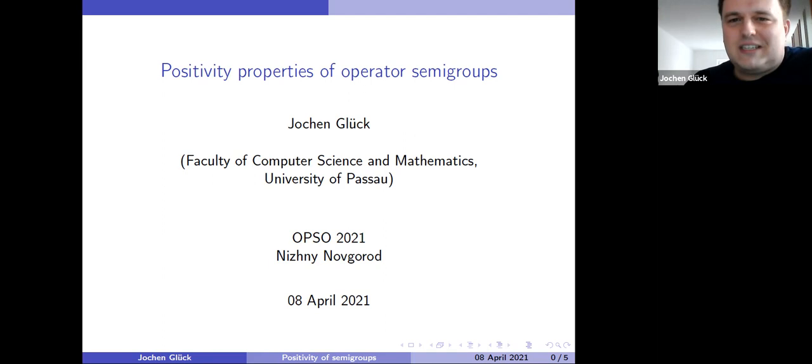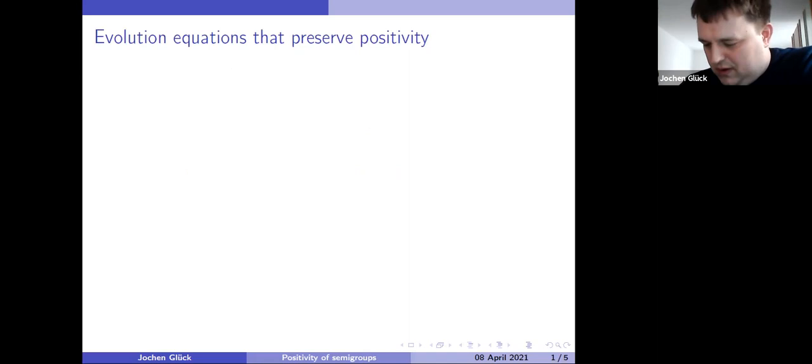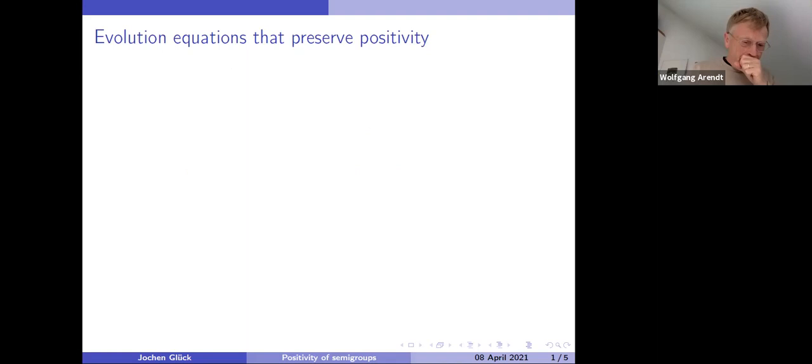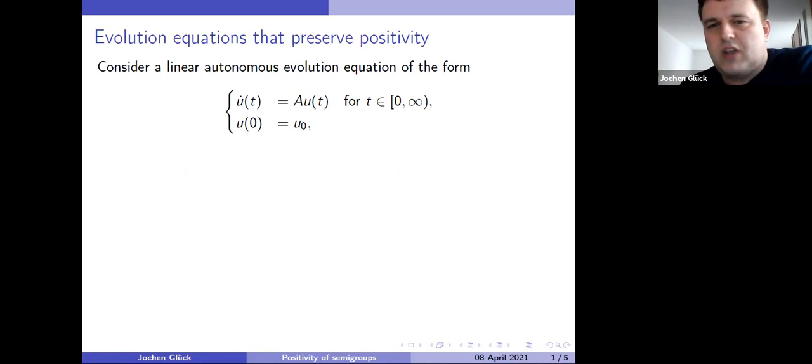Positive semi-groups on Banach spaces. What are we doing when we are discussing C0 semi-groups? We are discussing evolution equations. In fact, linear autonomous evolution equations. So we have a semi-group generator A and a Banach space E. We are looking for a function U from the positive real axis into the Banach space such that the derivative of U is A times U at each time. And we have an initial value U naught. That's what we all know if you're in the semi-group conference here. A is a generator. It's a closed operator in the Banach space.